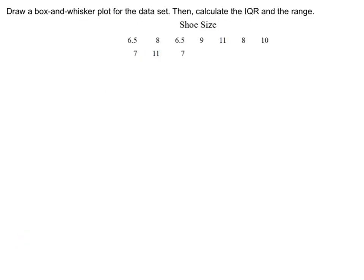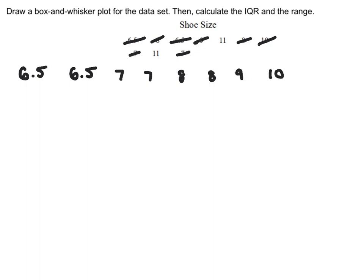In our next example, we start by rewriting the numbers in order. The smallest numbers are two 6.5s, then two 7s, two 8s, a 9, another 9, a 10, and two 11s. The minimum is the smallest number, 6.5, and the maximum is the biggest number, 11.